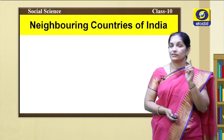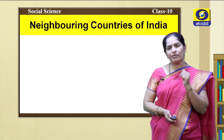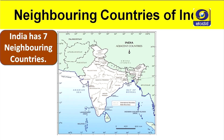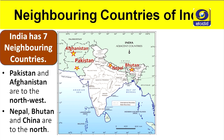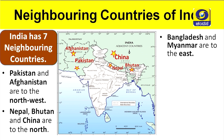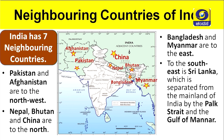Now let us know about the neighboring countries of India. India has seven neighboring countries. Pakistan and Afghanistan are to the northwest. Nepal, Bhutan, and China are to the north. Bangladesh and Myanmar are to the east. And to the southeast, Sri Lanka, which is separated from the mainland of India by the Palk Strait and the Gulf of Mannar. These are the seven neighboring countries of India.